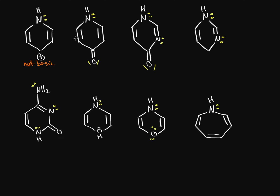What about this next structure? Same scenario — four electrons in the pi structure, all atoms sp2 hybridized. The lone pair moves here, this lone pair moves there, and then this lone pair moves over, giving the ring three double bonds — six pi electrons. So it will be aromatic, and therefore this nitrogen will be using that lone pair to make the ring aromatic. The nitrogen will be not basic.